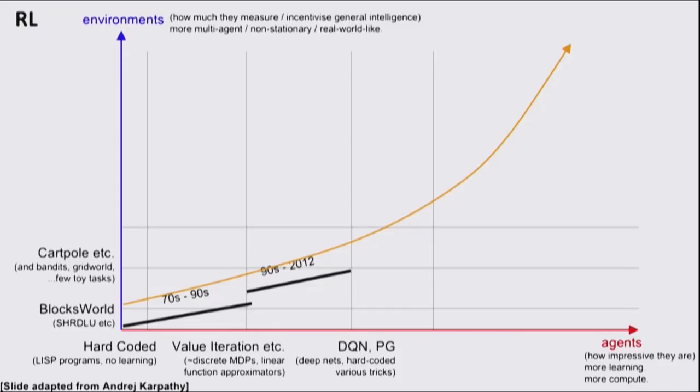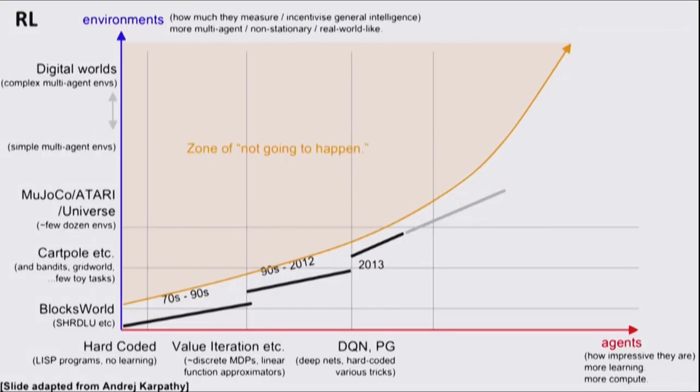Moving on, we start using function approximators somewhat successfully. 2013 results on Atari, some universe games and so forth. As we use more and more compute, we let the data speak more for itself and we can solve harder problems. There's still this zone where we're just not getting to. For example, if we wanted to solve big multi-agent environments or maybe real world problems, these methods are not really getting there for now and maybe they won't.